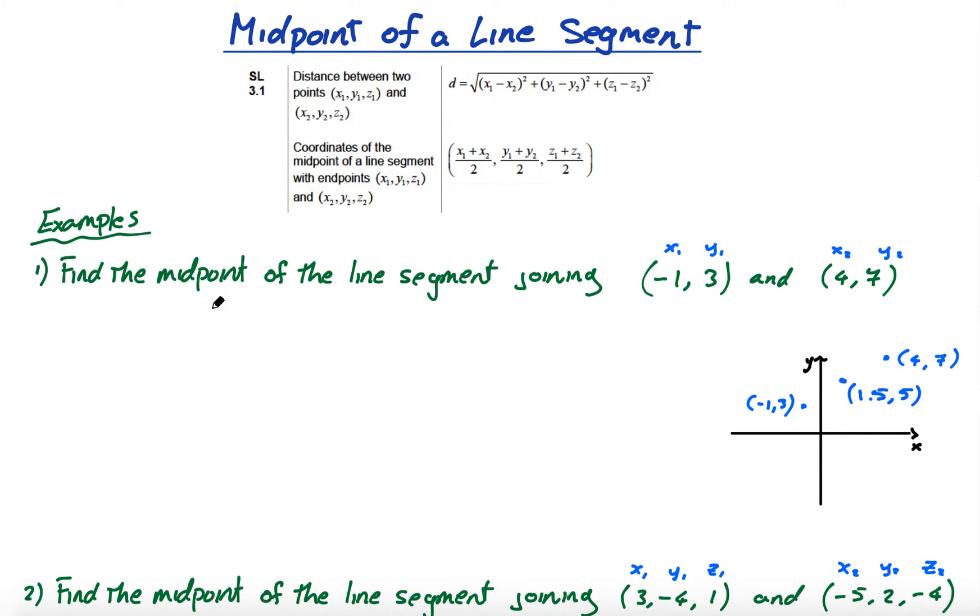But let's apply the formula to make sure we understand how to do it. So the formula for the midpoint is x1 plus x2 over 2 comma y1 plus y2 over 2. And this equals in our situation negative 1 plus 4. So this is our x1 and this is our x2. So negative 1 plus 4 all divided by 2 comma 3 is y1 plus 7 all over 2 which gives me 3 divided by 2 is 1.5 and 3 plus 7 is 10 divided by 2 is 5. 1.5, 5 which is what I had.